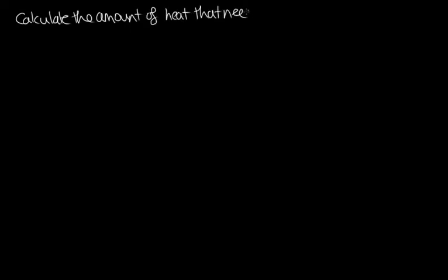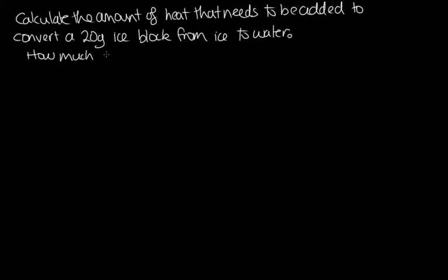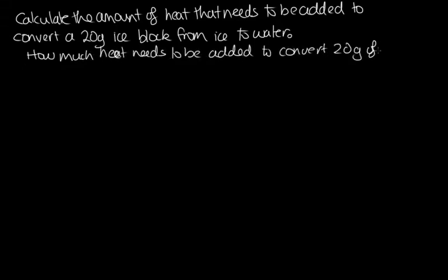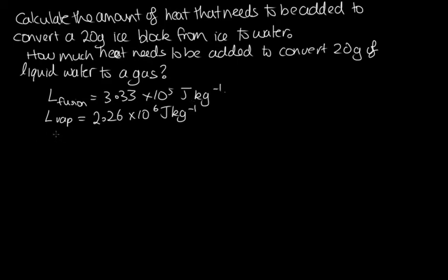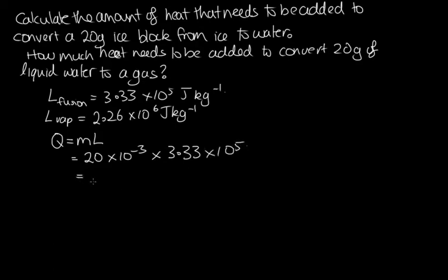Calculate the amount of heat that needs to be added to convert a 20 gram ice block from ice to water. We're told the latent heat of fusion for water is 3.33 × 10⁵ joules per kilogram, and the latent heat of vaporization for water is 2.26 × 10⁶ joules per kilogram. Using q = mL, the mass in kilograms is 20 × 10⁻³. Multiplying by the latent heat of fusion, 3.33 × 10⁵, we get 6,660 joules. So we need to add 6,660 joules of energy to melt the ice.